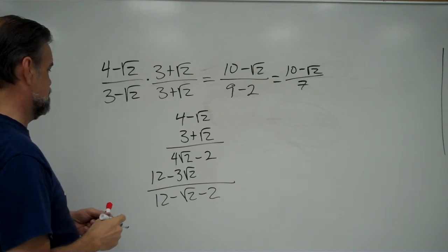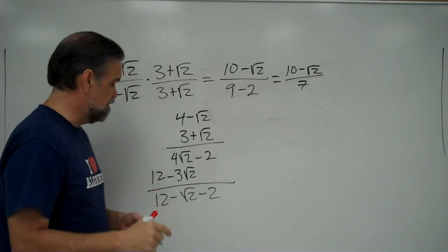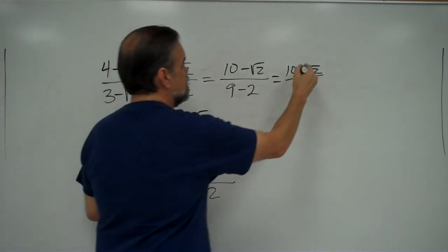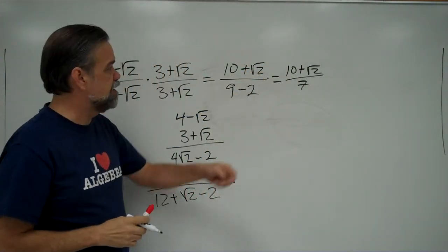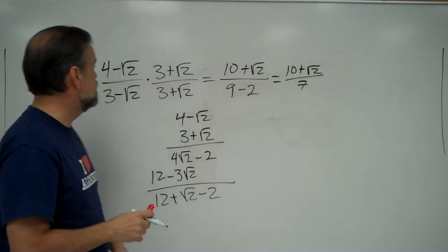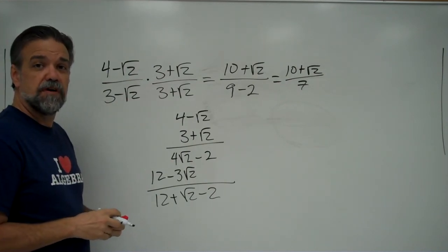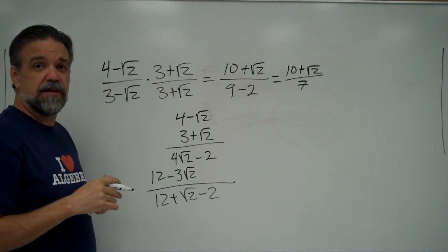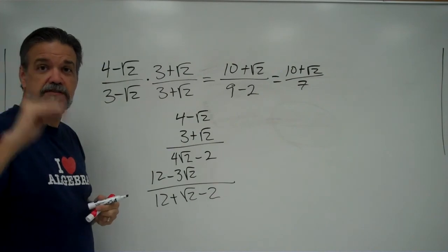Hold on — you should have caught this. The square root of 2 terms: 4 times the square root of 2 minus 3 times the square root of 2 is positive square root of 2, not negative. So the correct answer is 10 plus the square root of 2 over 7. If you check on the calculator, 10 plus the square root of 2 divided by 7 equals 4 minus the square root of 2 divided by 3 minus the square root of 2. This comes in really handy later on. Thank you very much. See you later.